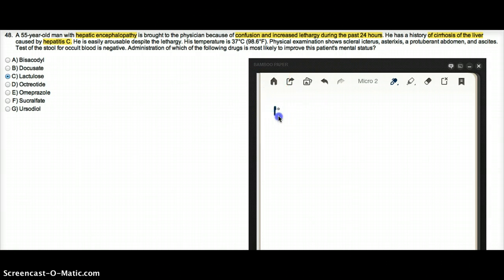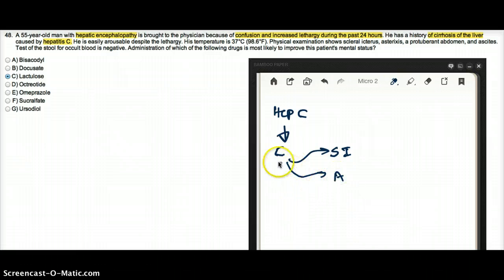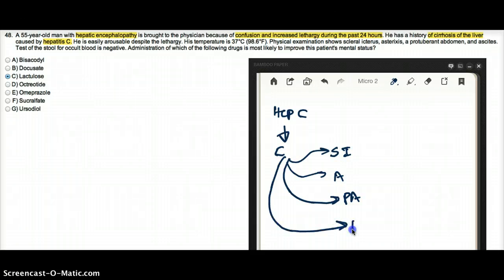So this patient had hepatitis hep C which caused cirrhosis and now he has all kinds of problems. He has scleral icterus, there is asterixis, protuberant abdomen, and ascites. All these are signs of cirrhosis. And now he is having confusion and lethargy.